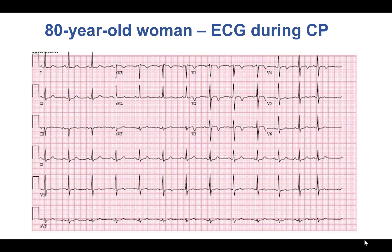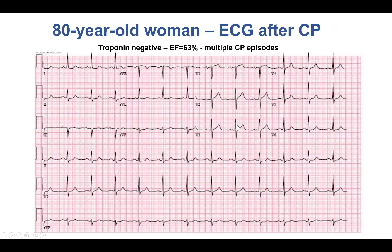The patient was an elderly woman who presented with rest chest pain and was found to have ST segment changes with T-wave inversions in the precordial leads during those episodes of chest discomfort, which actually normalized when the chest pain resolved. She had many of those episodes; however, her cardiac biomarkers were negative and her ejection fraction was normal.